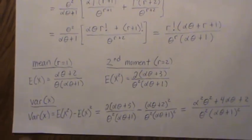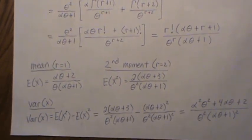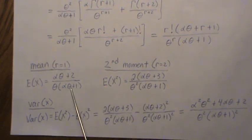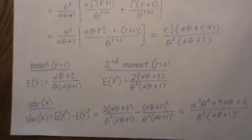Then the variance becomes the expected value of x squared minus the mean squared. Plugging in the values that we derived and combining, we get this. So this is the variance, the mean and the variance of the two-parameter Lindley distribution.